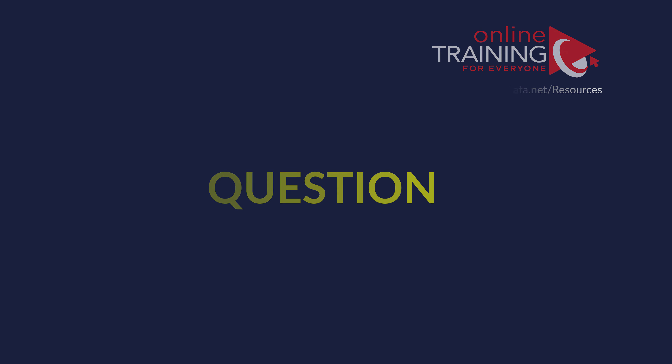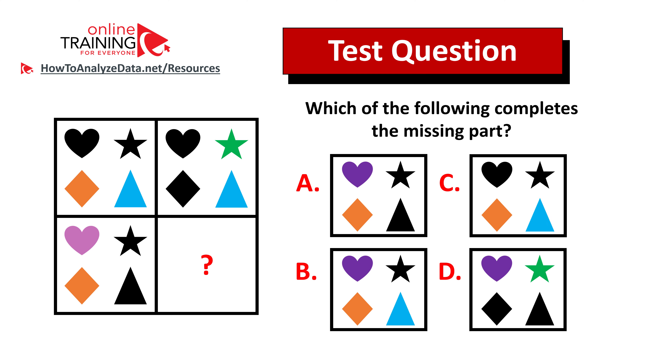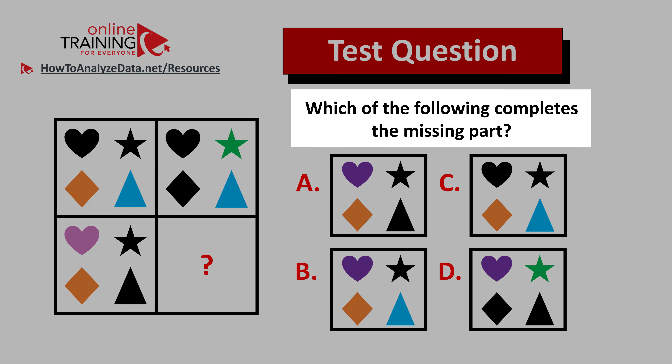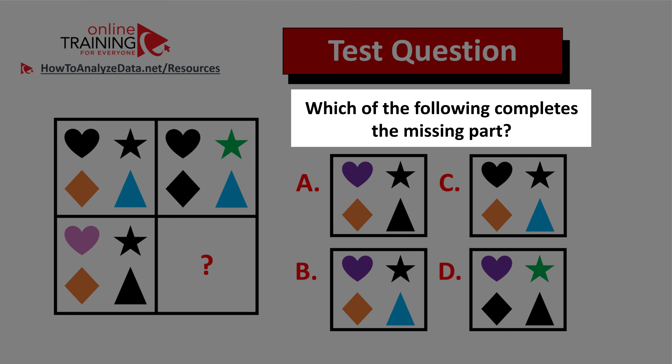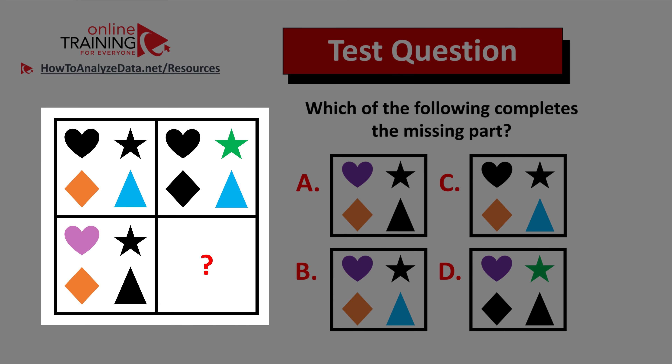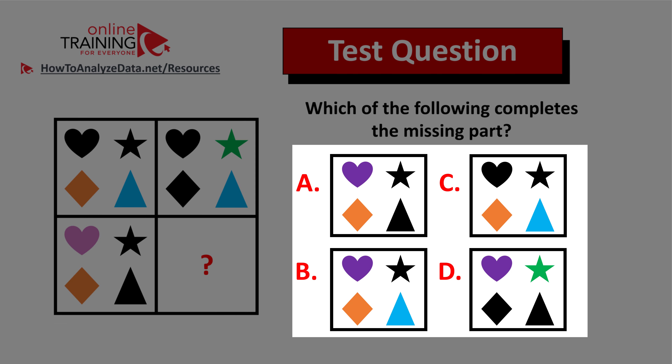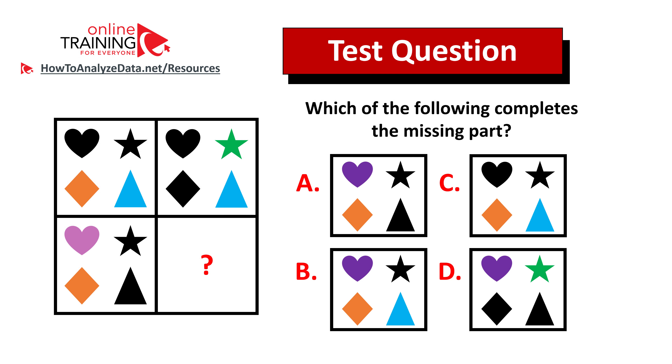Let me share with you a tricky question which tests your reasoning, analytical, as well as visualization skills. Which of the following completes the missing part? You're presented with a 2 by 2 box, and one of the squares is missing. You have 4 different choices to choose from. Take a closer look and see if you recognize the pattern.